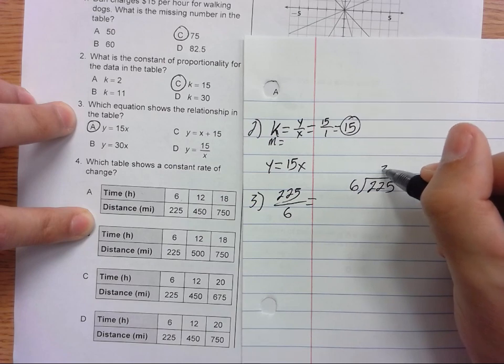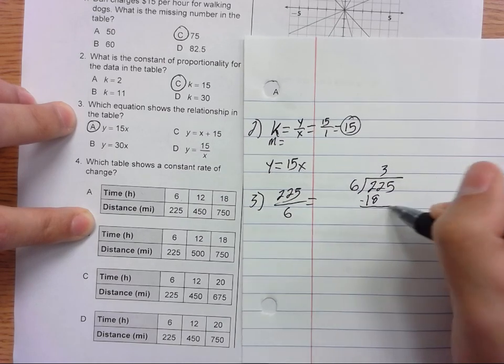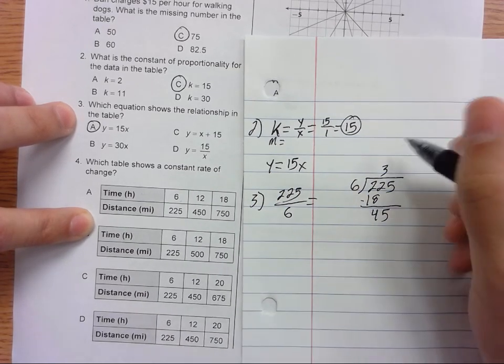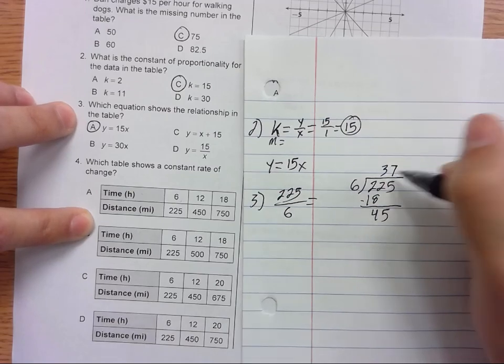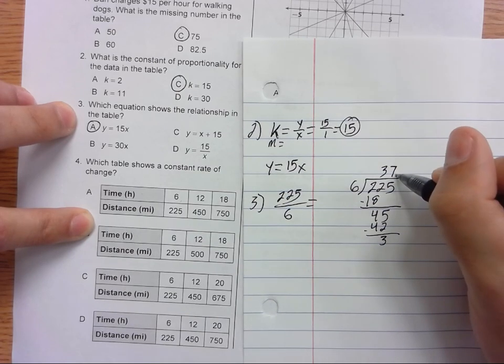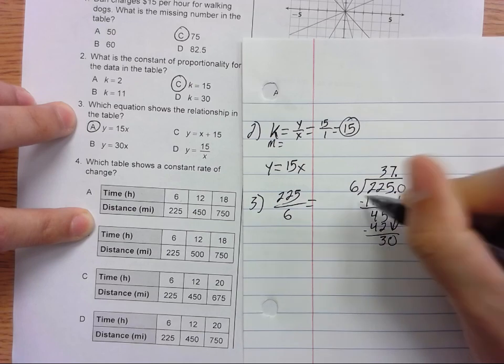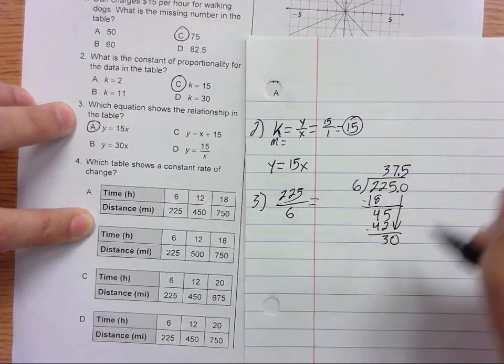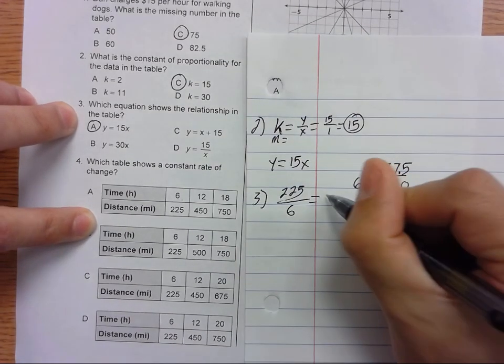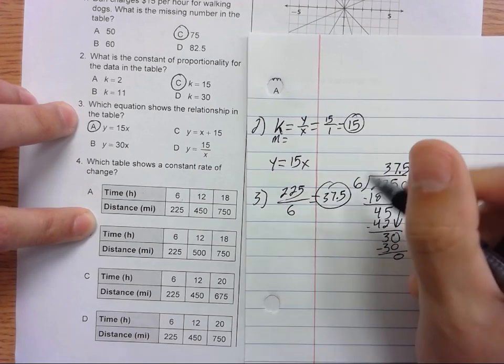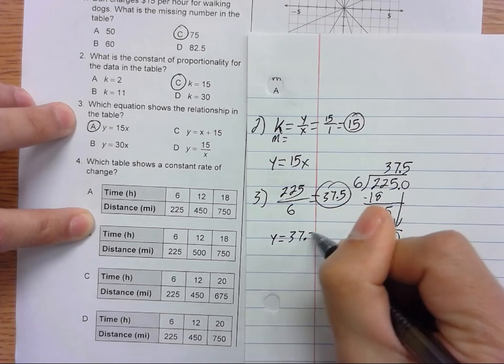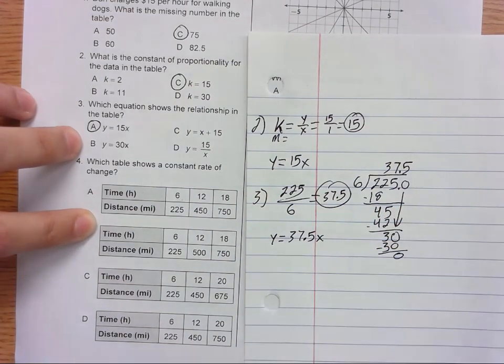6 goes into 22 three times. 6 times 3 is 18, minus and you get 4. Bring down the 5. 6 goes into 45 seven times. That's 42, minus and get 3. Add a decimal and a 0, bring it down. 6 goes into 30 five times. 6 times 5 is 30 and those will cancel.